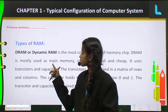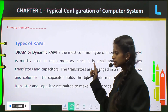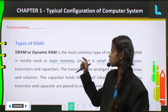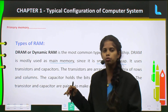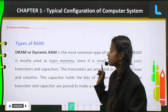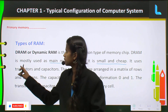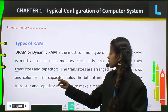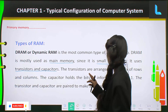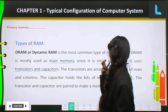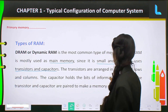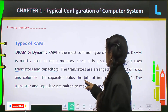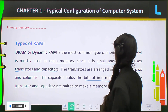Dynamic RAM is the most common type of memory chip. It is used as main memory since it is small and very cheap. In DRAM, transistors and capacitors are arranged in a matrix of rows and columns. Capacitors hold the bits of information, which are zeros and ones.